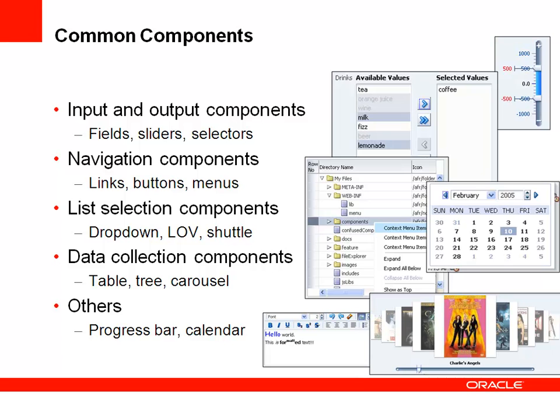The common components are divided into input and output components, such as fields, sliders, and selectors. Navigation components include buttons, links, and menus. List selection components include the drop-down list, the list of values, as well as the shuttle component. Tables, trees, and carousels can help you display collections of information, and there are various other components that you can use in your application.